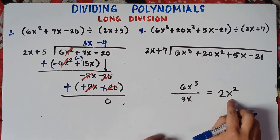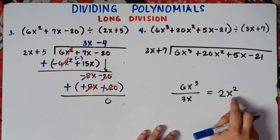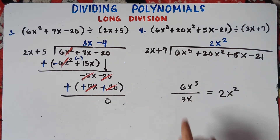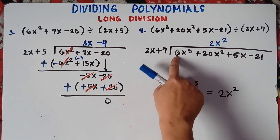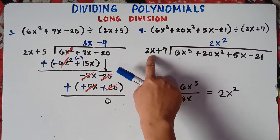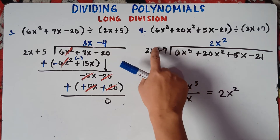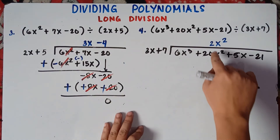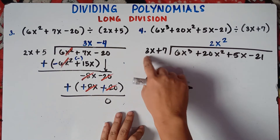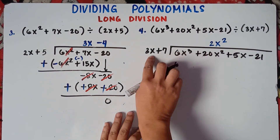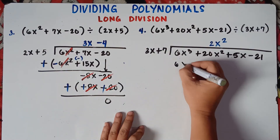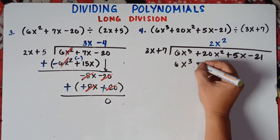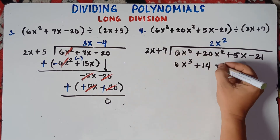Since this is x squared, align it with x squared in the dividend. Now multiply: 2x squared times 3x — 2 times 3 is 6, and x squared times x, adding the exponent, gives x cubed — so 6x cubed. Then 2x squared times 7: 2 times 7 is positive 14, and copy x squared, giving positive 14x squared.